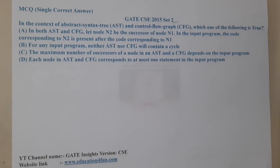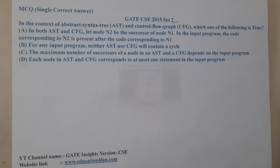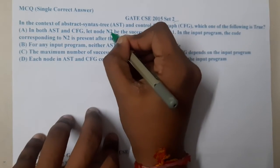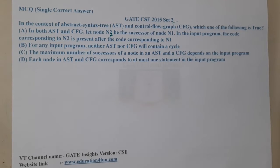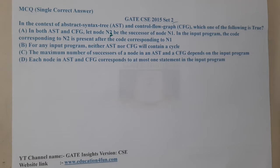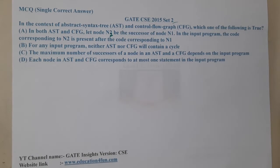Option A says: in both AST and CFG, let node N2 be the successor of node N1. In the input program, the code corresponding to N2 is present after the code corresponding to N1. Now let us look at option B: for any input program, neither AST nor CFG will contain a cycle.